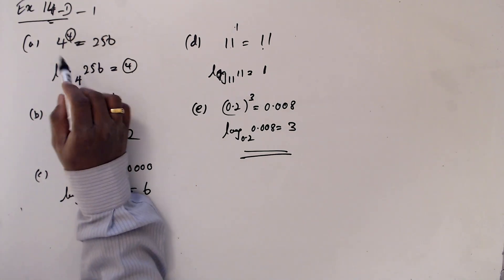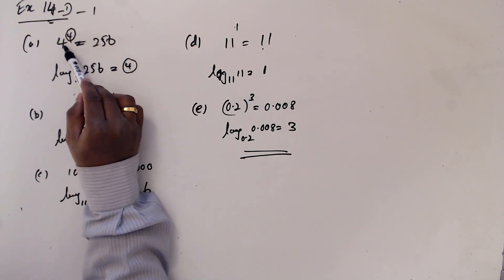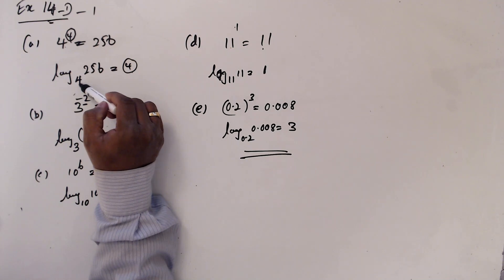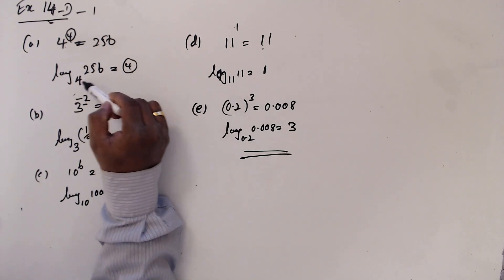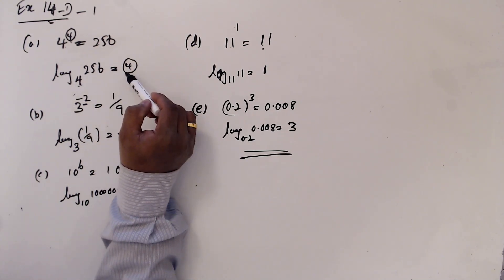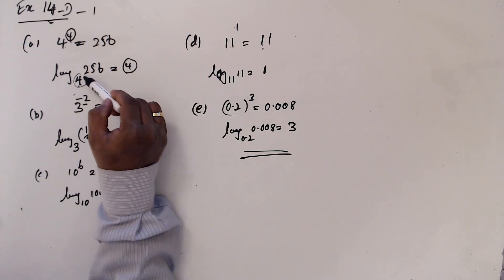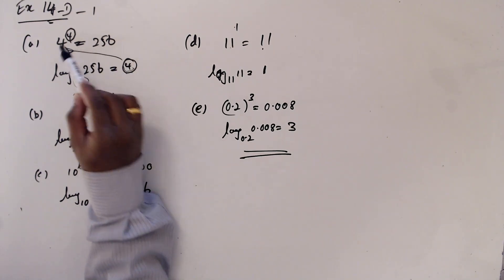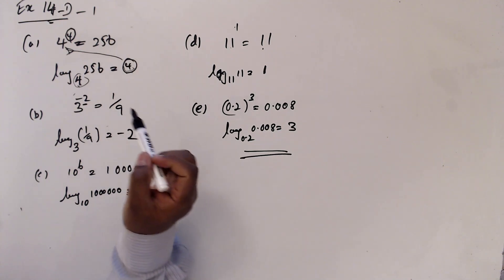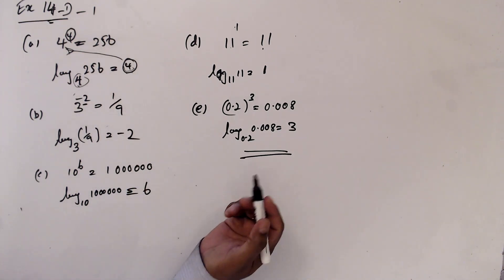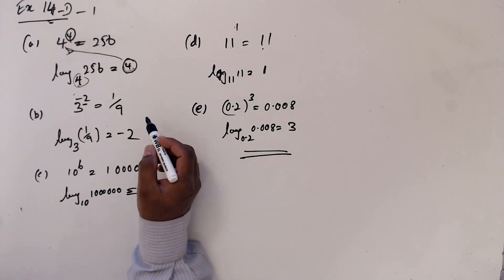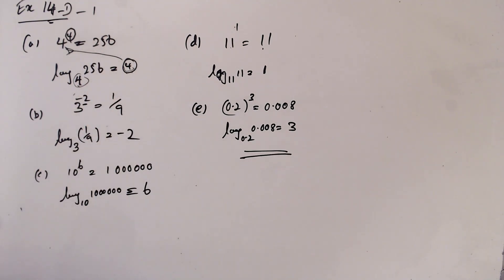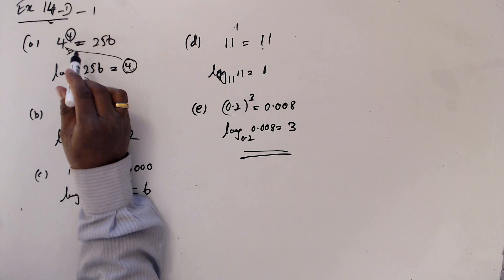When you look at this one, you can see this is the base and this is the power. In logarithm, this is base and power. Base is here, power here. If this is base and this is power, you can write like this. The next exercise is we have the logarithm, and we want to convert into exponential form.